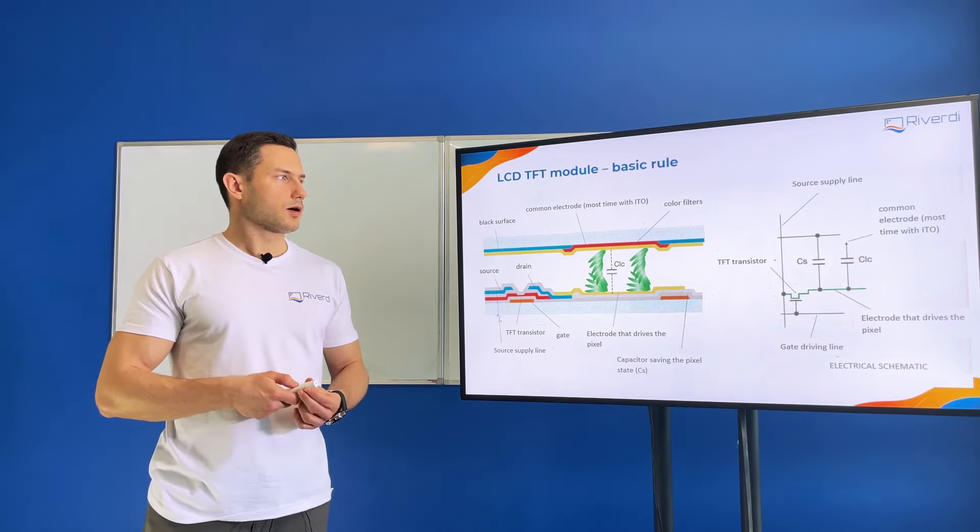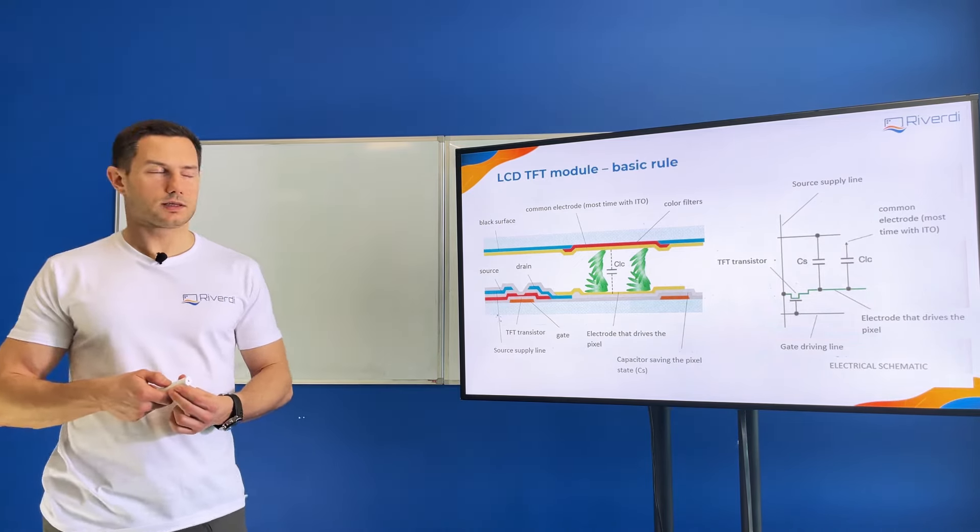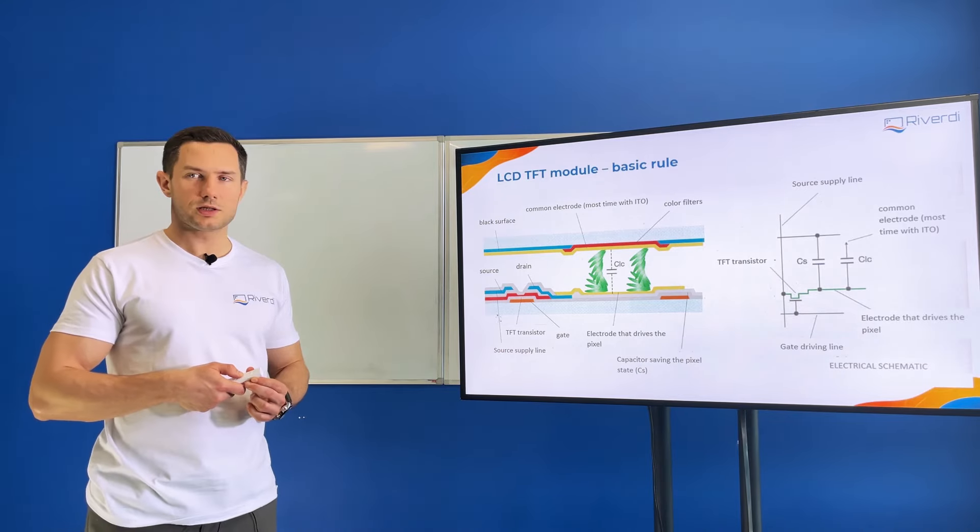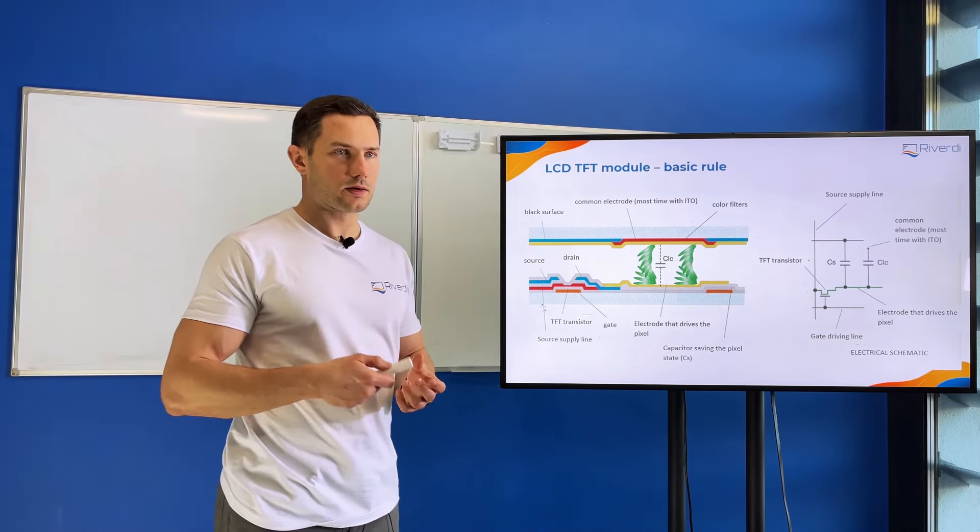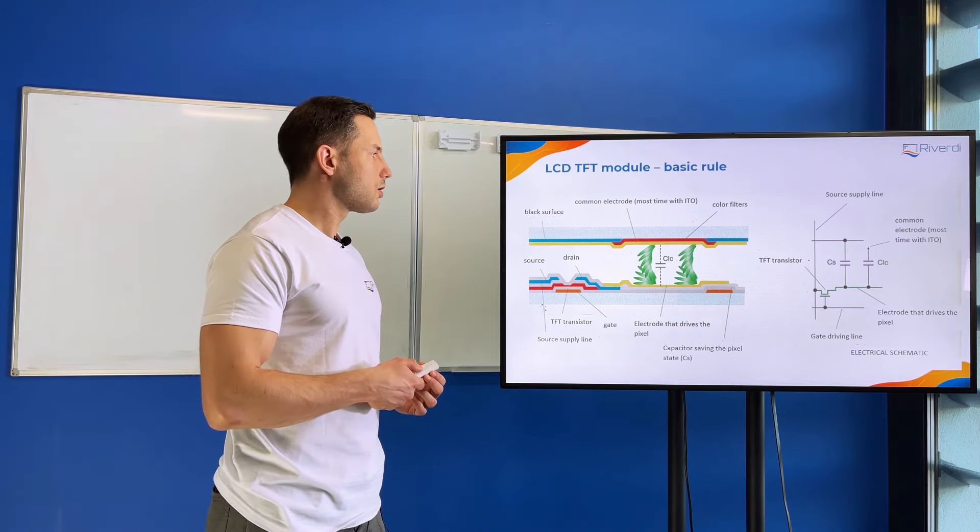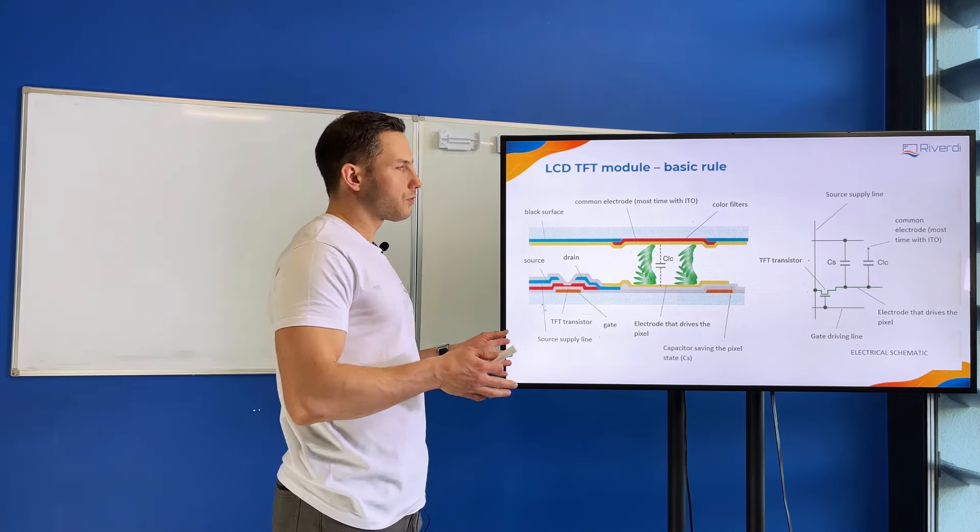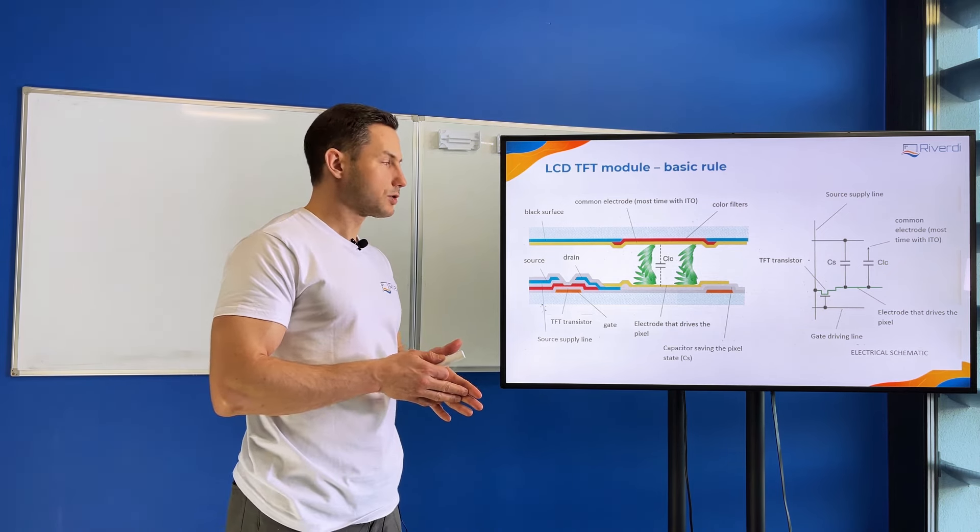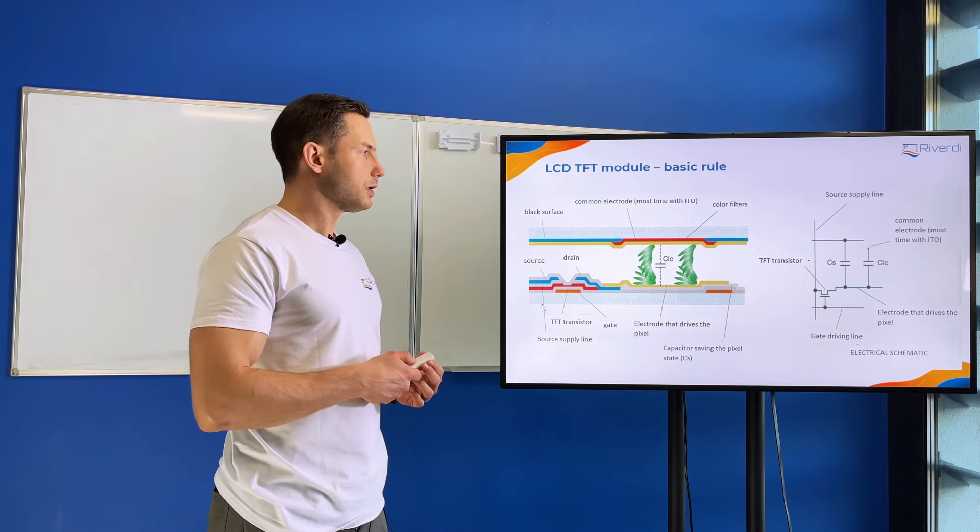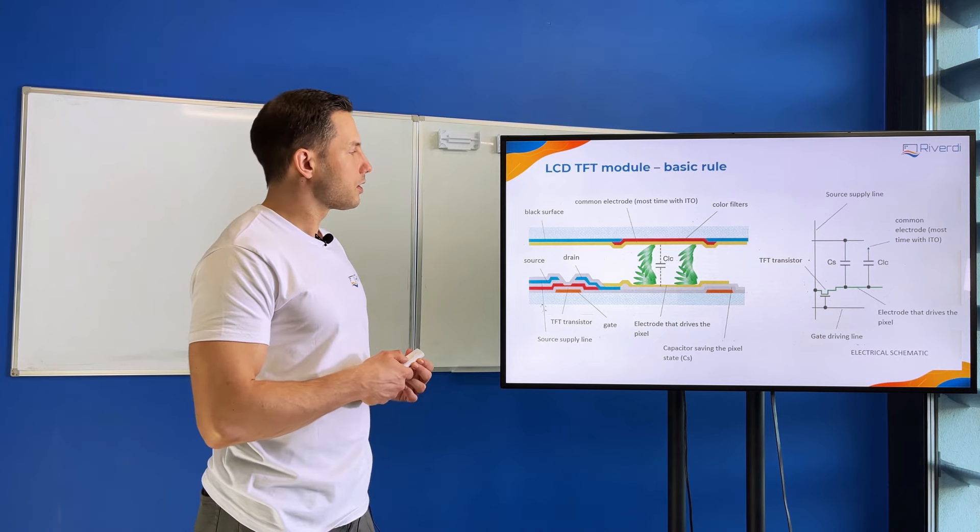That's why from RGB pixels, from three basic colors, we can build 16 million different colors, from white to black and everything in between.